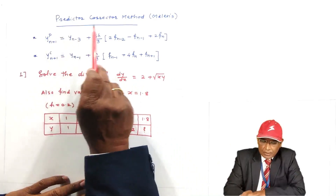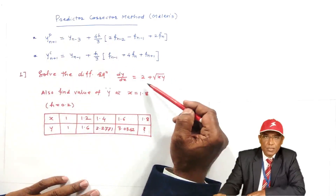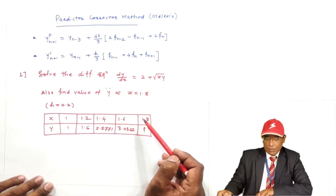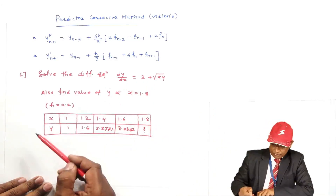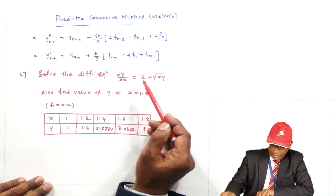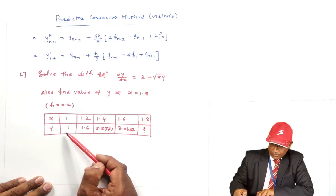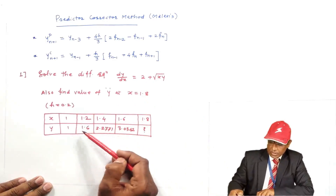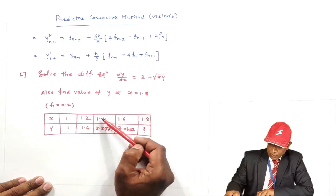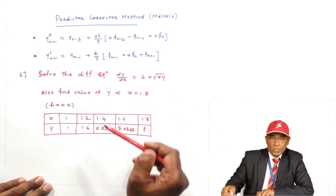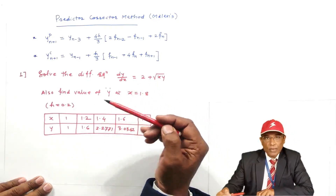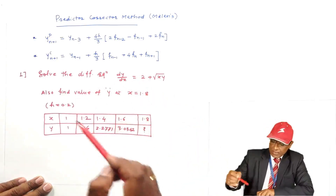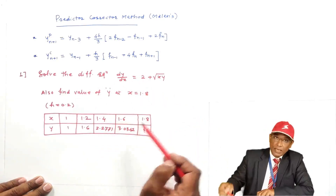We are going to use the Predictor-Corrector method to solve this differential equation and find Y at x = 1.8. Solutions are given for x = 1.0, 1.2, and 1.4. But the solution at x = 1.8 is not known — that is what we have to find.